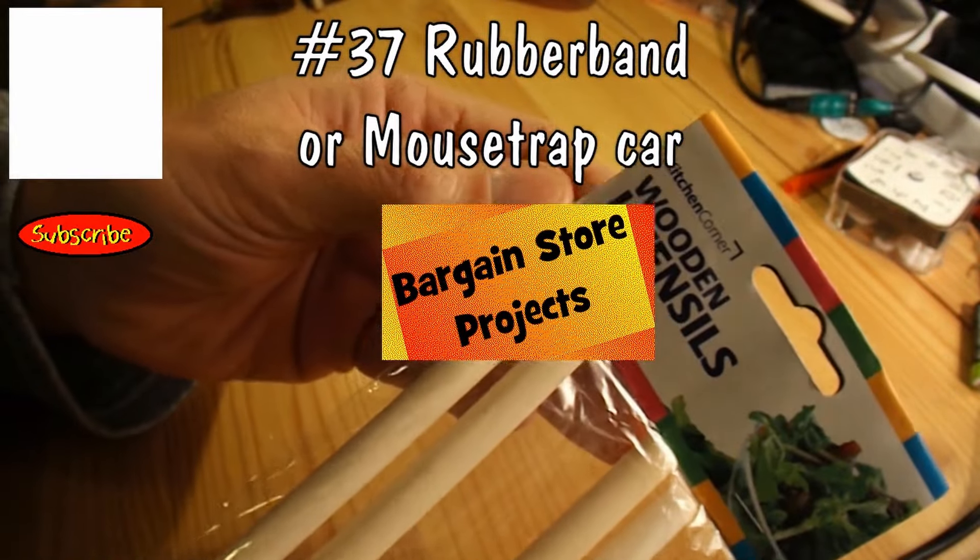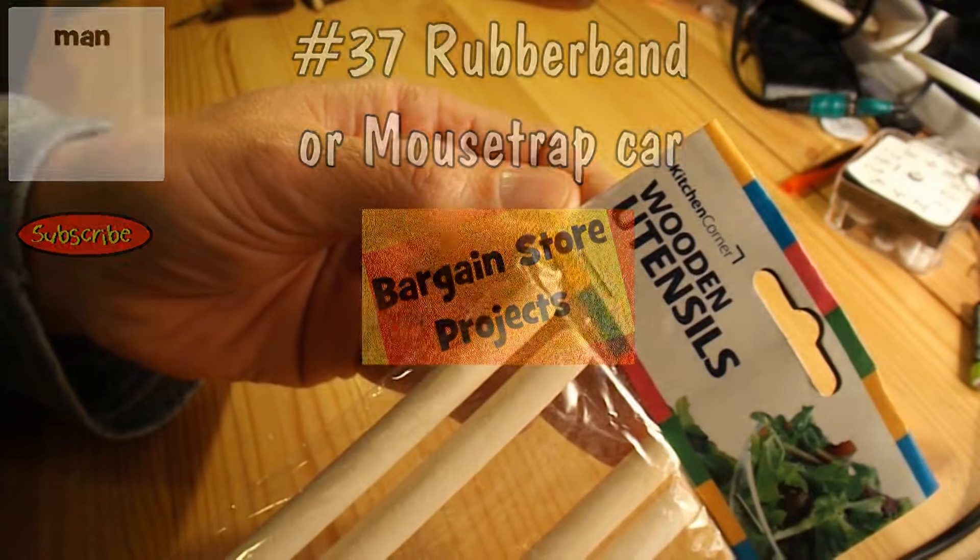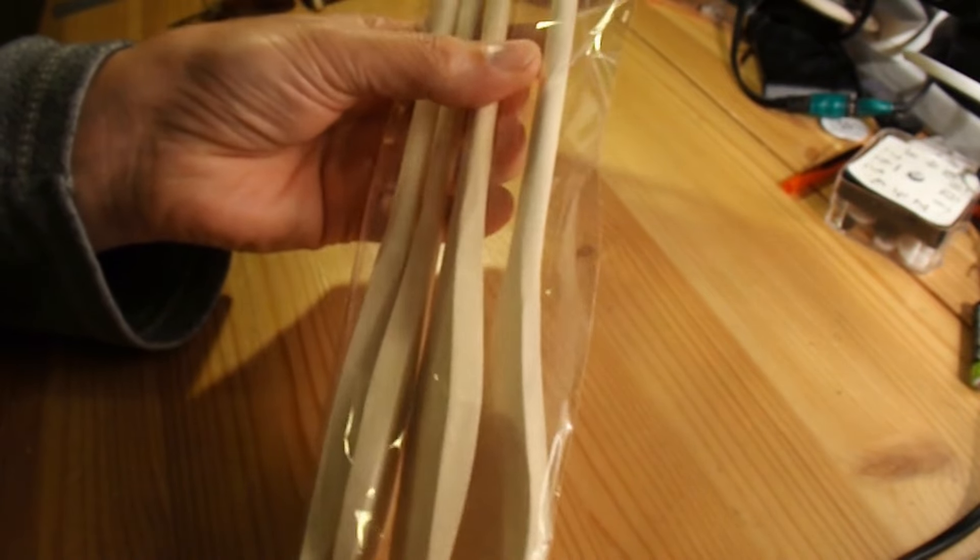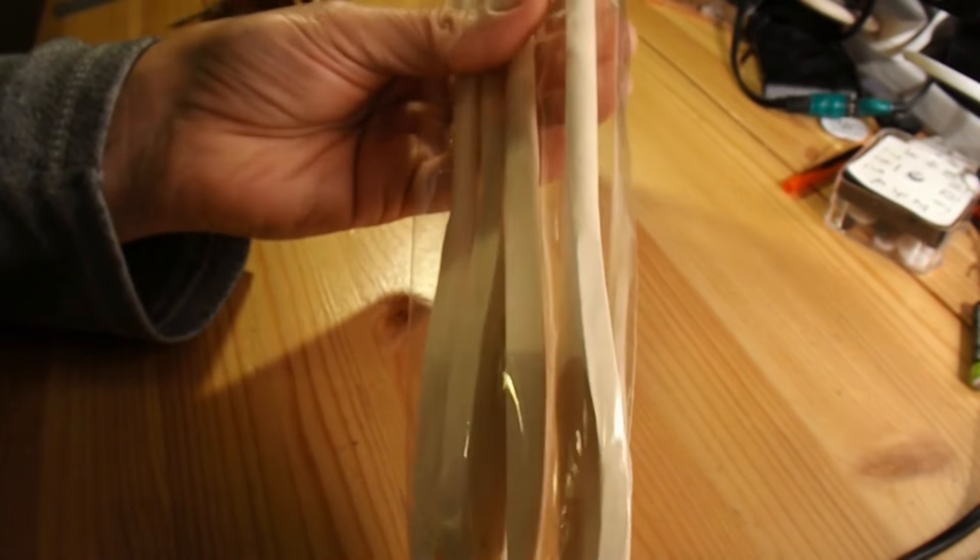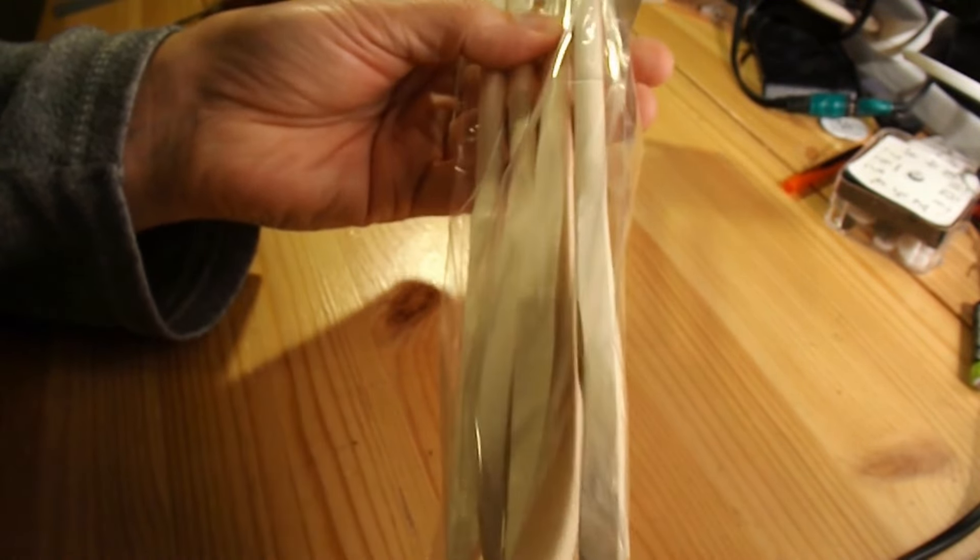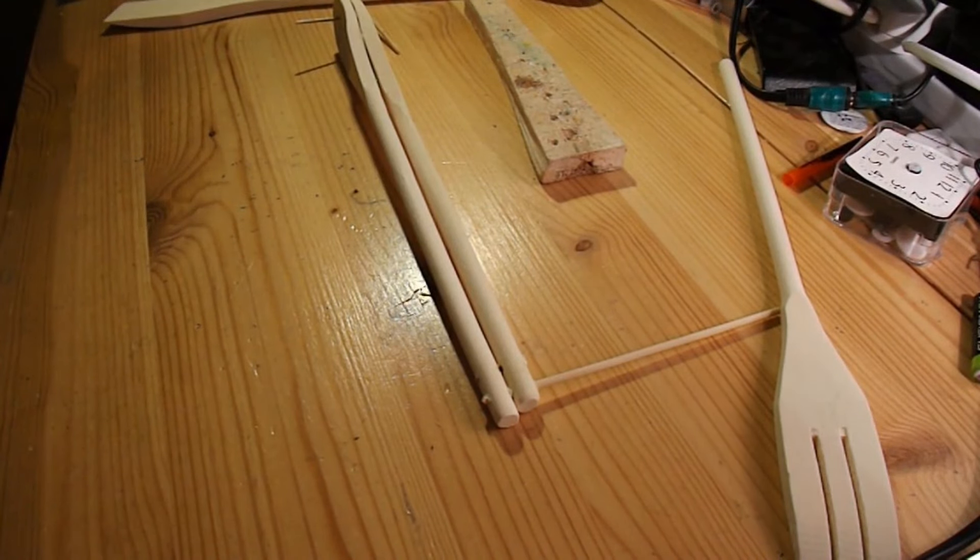Anyway, we're going to use these wooden kitchen utensils for our next bargain store project. I'm going to make a rubber band powered car and probably a mousetrap powered car using these. I was just about to get some CDs out to make the wheels, and I remembered in the comments on one of my other projects, Pascal Kynz had said could I make a project entirely out of wood.